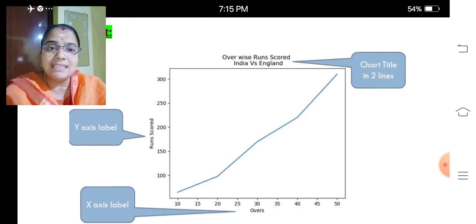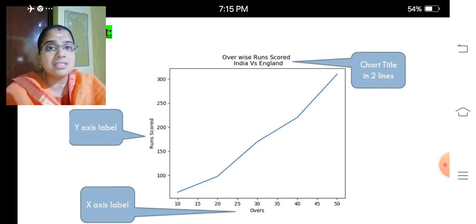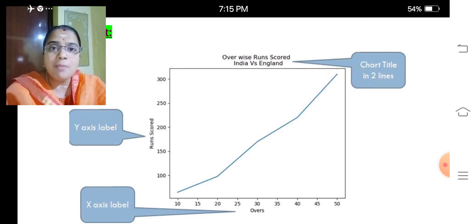So the output of the plot looks like this. On the x-axis we can see the overs, on the y-axis we can see the runs scored, and at the top we can see the chart title in two lines. This is the line graph.